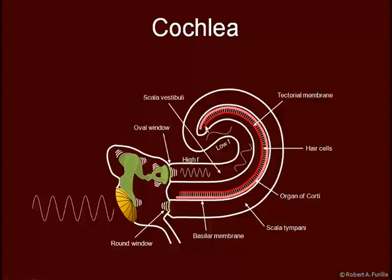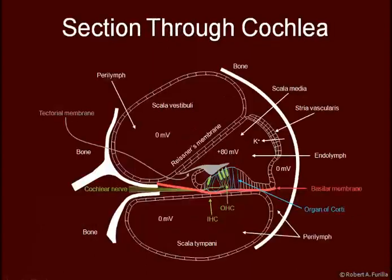An individual with very good hearing can hear from 20,000 cycles per second—20,000 hertz—down to about 20 hertz at the apex. If we cut through the cochlea, we can see the scala vestibuli, where the oval window pushes, and the scala tympani, where the round window is connected, and then the scala media. This is the tectorial membrane, and this membrane pushes down on these hair cells in the organ of corti.